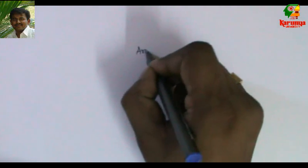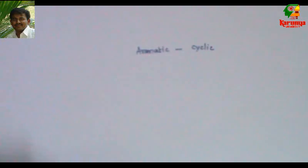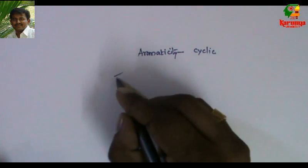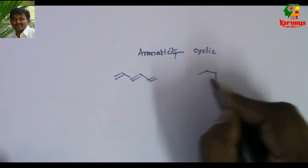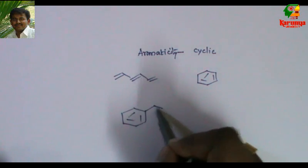Let us understand the four criteria that must be fulfilled for a molecule to be aromatic. The first one is that the molecule should be cyclic. Generally, the compounds given in a problem will be cyclic. What about styrene? Here, you have to consider only the cyclic portion.